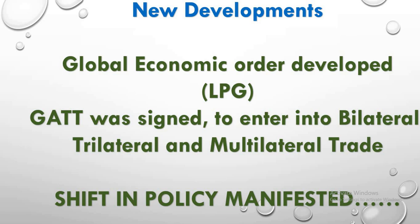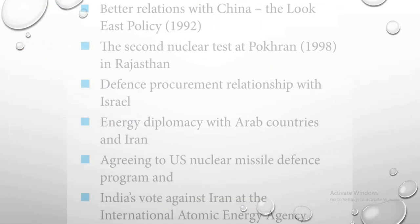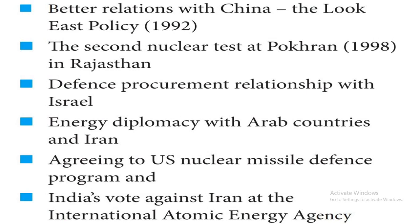The shift in policy also manifested in several ways. The first was the better relationship with China — though we know how that relationship has been strained nowadays. The second nuclear test was conducted in Rajasthan in 1998. The defense procurement relationship with Israel was renewed. Energy diplomacy with Iraq and Iran was developed. India agreed with the US nuclear missile defense program, and India voted against Iran at the International Atomic Energy Agency. With this, the policy was manifested by India.